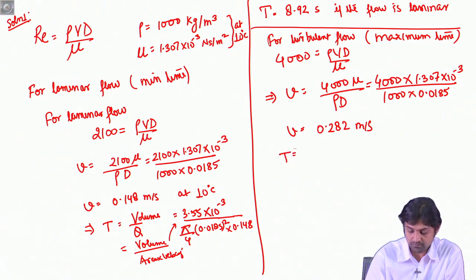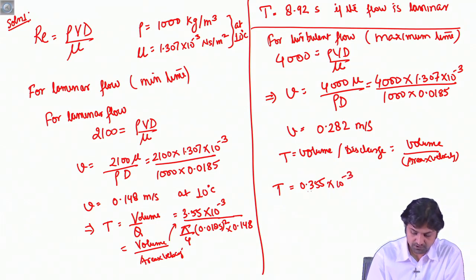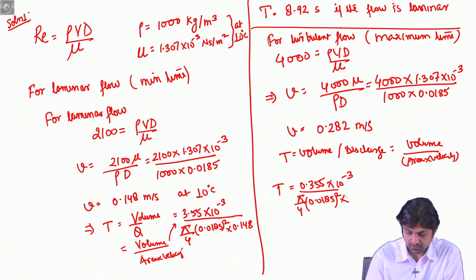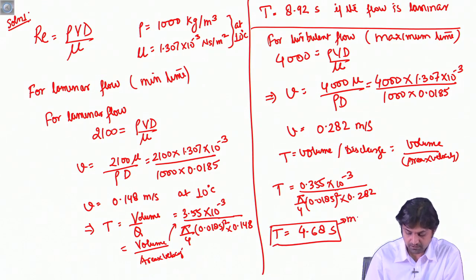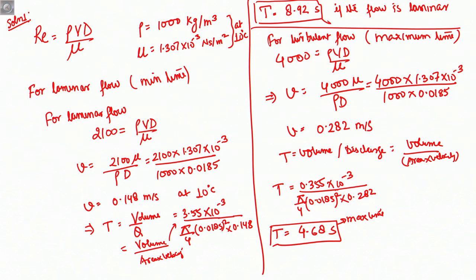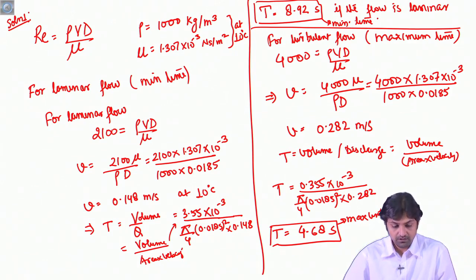The time taken will again be volume divided by discharge, or volume divided by area times velocity. This gives 0.355 × 10⁻³ divided by (π/4 × 0.0185² × 0.282). The maximum time required is 4.68 seconds. So 8.92 seconds was the minimum time for laminar flow and 4.68 seconds is the maximum time for turbulent flow.